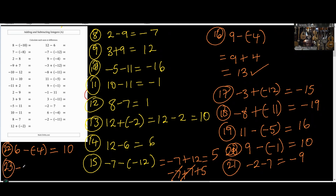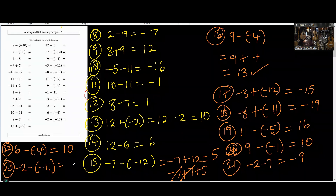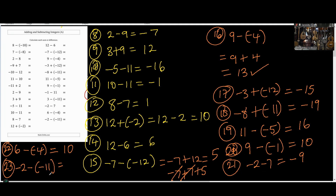The last one: negative 2, then minus minus 11. The double minus changes to plus, so that means you have 2 negatives and 11 positives. The answer is going to be positive — positive 9.